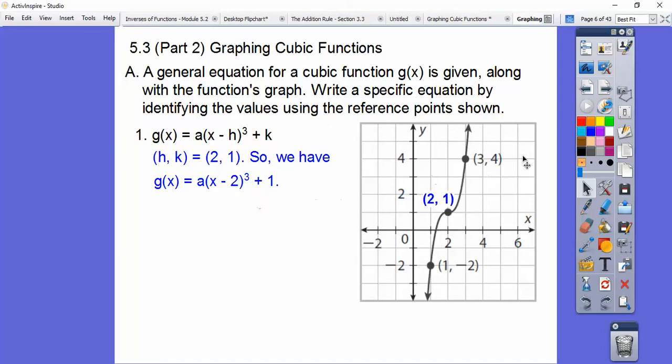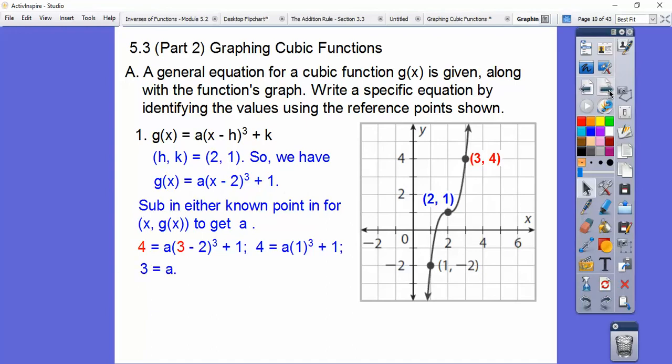Now if that doesn't convince you, just substitute a point in. You can substitute at this point or this point and solve. I just like to see how much we went over and how much it went up, because it's going to have a vertical stretch because of the a. But I substituted in that for x and that in for g(x) because that's y. So 3 minus 2 is 1, 1 cubed is 1. We get that equation, subtract 1, and we get a equals 3. So there's our equation. But I knew that because it went over 1 up 3.